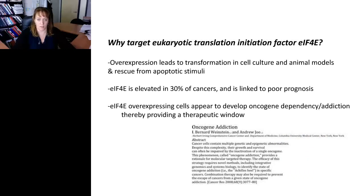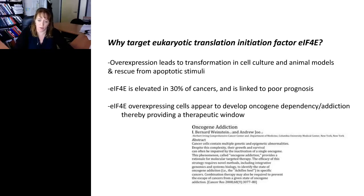Why target EIF4E, or 4E, which is our nickname for the Eukaryotic Translation Initiation Factor 4E? 4E leads to transformation in cell culture and animal models and rescues cells from apoptotic stimuli. EIF4E is overexpressed in 30% of human cancers, and this is linked to poor prognosis. Cancer cells overexpressing 4E actually develop an oncogene dependency or addiction, thereby providing a therapeutic window for targeting EIF4E.